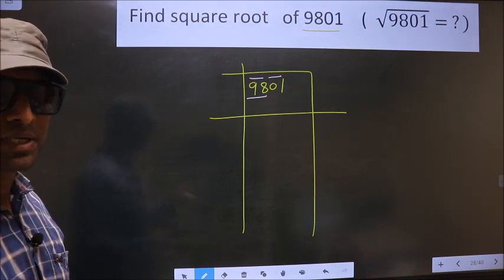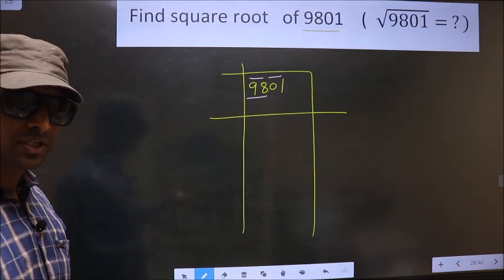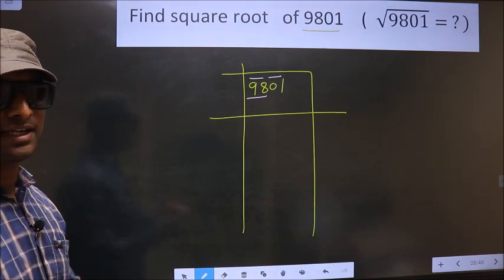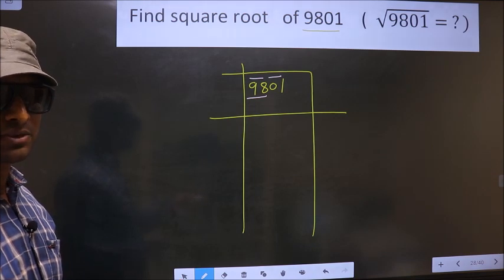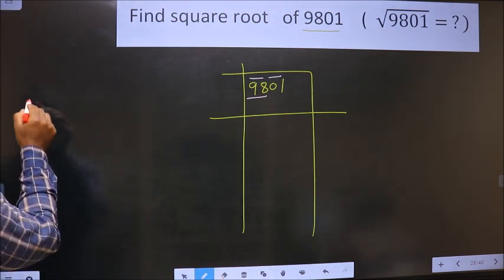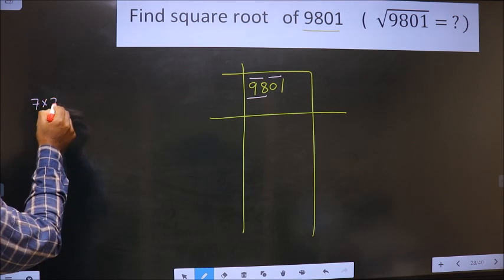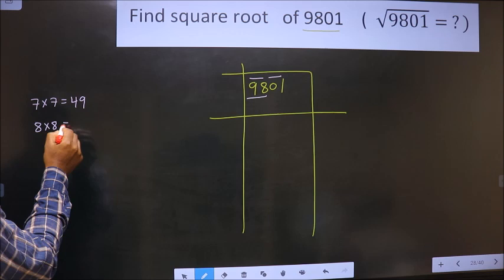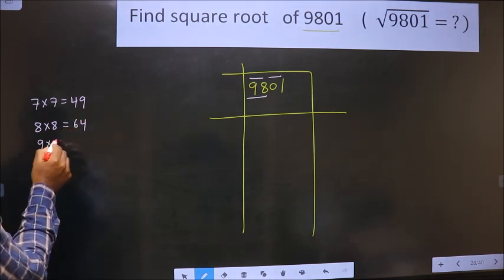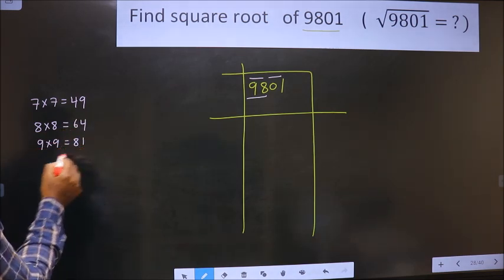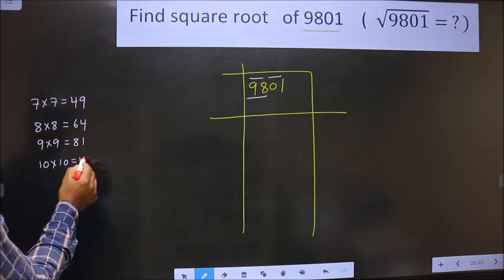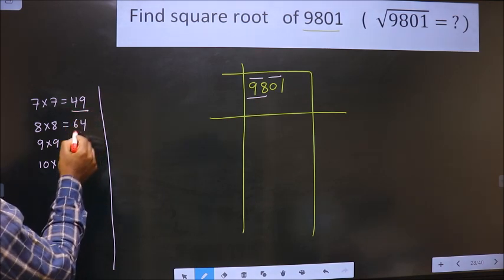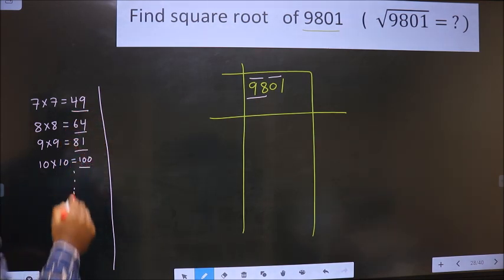98 is not a perfect square. So now we should check between which two perfect square numbers does 98 lie. And the perfect square numbers are these: 7 into 7, 49; 8 into 8, 64; 9 into 9, 81; 10 into 10, 100, and so on. These numbers are called perfect squares.